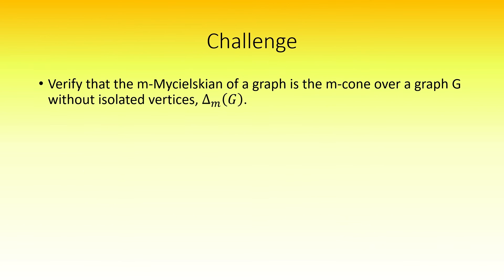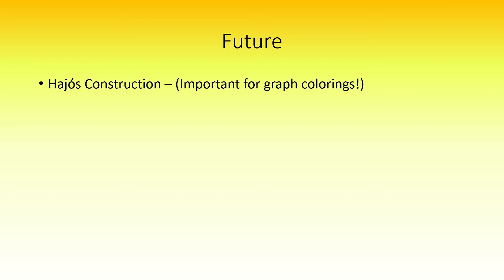As a challenge, I encourage you to verify that the m-Michelskian of a graph is the cone delta sub m over that graph when it does not have isolated vertices. That's it for this video. In my next video, we'll take a look at the Hajos construction, another important construction from graph theory that can be used in the theory of graph colorings.